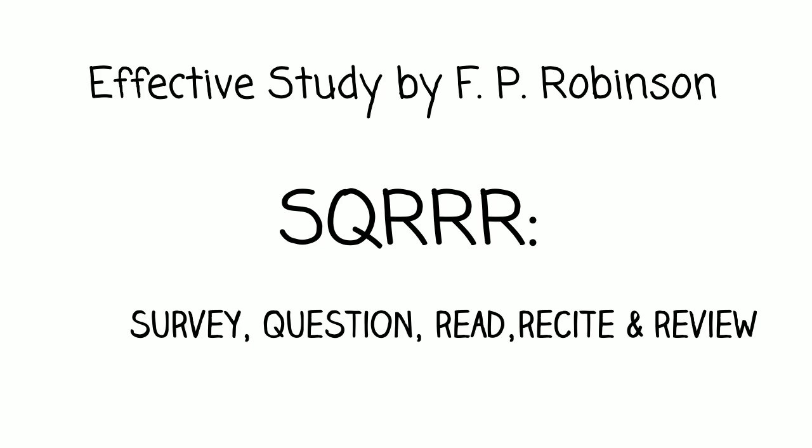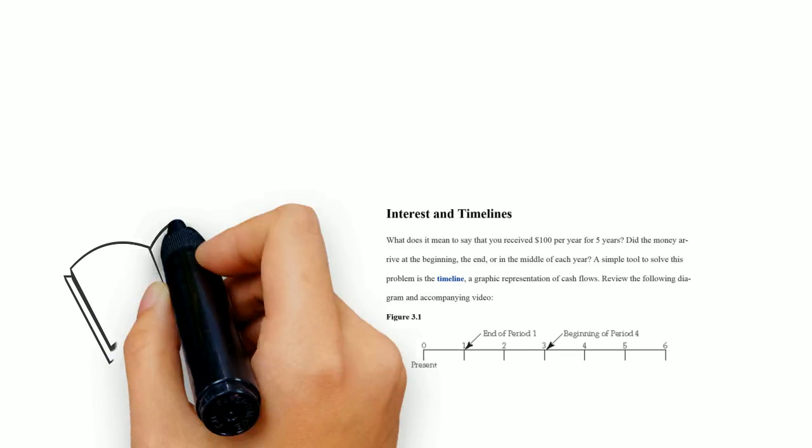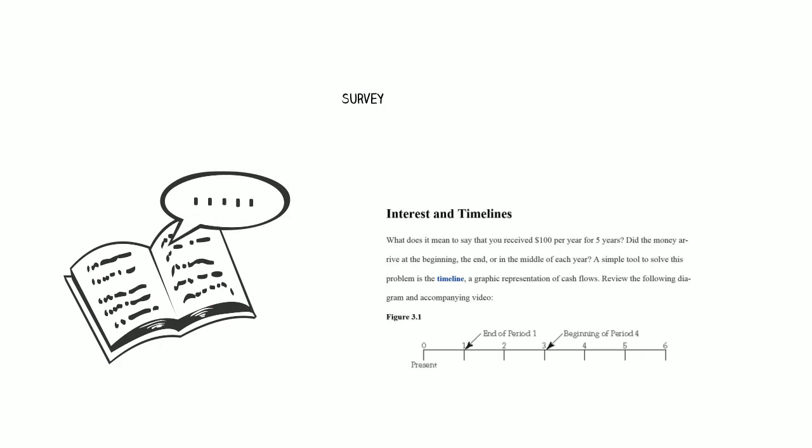To survey a chapter, first read the introduction and learning objectives or outline. Then flip through the chapter and read the headings of sections and look at tables and figures. This shouldn't be time-consuming. You should just be skimming.